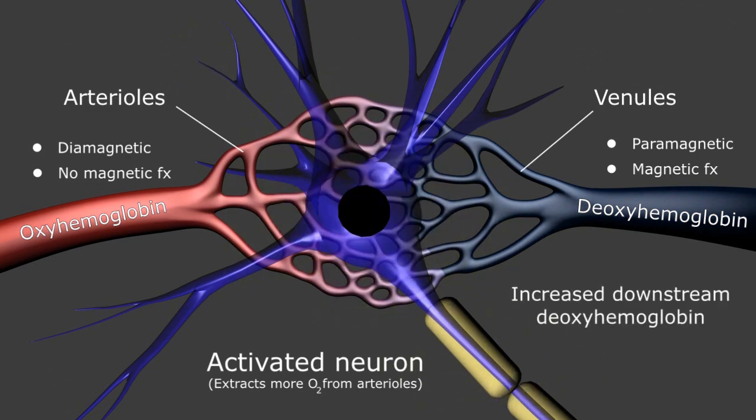As such, we would expect a significant signal drop-off in the region of activated brain due to regional increases in the paramagnetic deoxyhemoglobin. However,